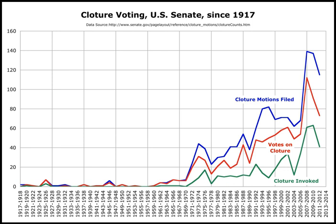In 1917, during World War I, a rule allowing cloture of a debate was adopted by the Senate on a 76–3 roll call vote at the urging of President Woodrow Wilson, after a group of 12 anti-war senators managed to kill a bill that would have allowed Wilson to arm merchant vessels in the face of unrestricted German submarine warfare. From 1917 to 1949, the requirement for cloture was two-thirds of senators voting.